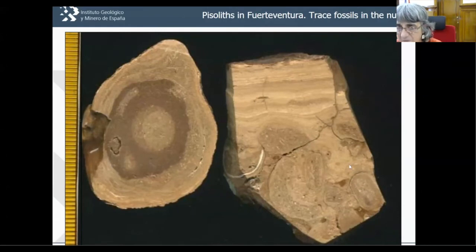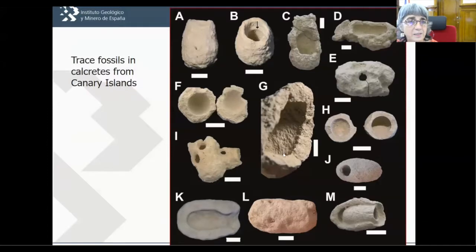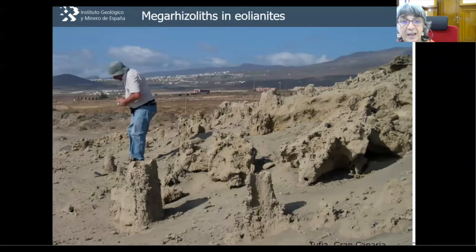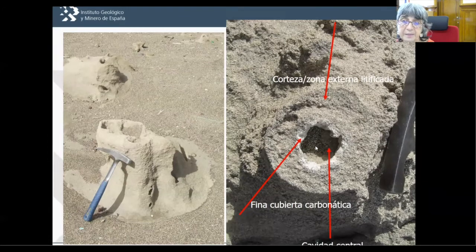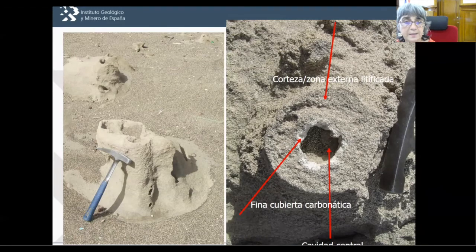These piscolites form on the nucleus of trace fossils. The trace fossils in the Canary Islands are beautiful and are everywhere. Other very nice features to see in the Canary Islands are these large rhizoliths — what we call mega-rhizoliths in eolianites in Gran Canaria. These vertical cylinders are up to one meter high and 10 to 30 centimeters in diameter, with zonation — the inner part is sometimes missing — a fine white coating and an external cortex typically in eolianite. Some people have interpreted these structures as seismic structures.